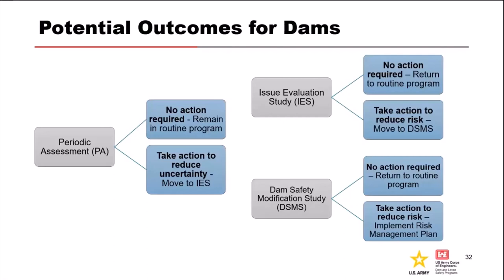Here are the potential outcomes for dams. For a periodic assessment, there are only two outcomes: either we don't need to do anything more and return to the routine program, or we need to take action or reduce uncertainty and go to an issue evaluation study. For an issue evaluation study, there are again only two outcomes: either go back to the routine program, or proceed to a dam safety modification study to reduce risk. Coming out of a modification study, there are only two potential actions: no action — which does happen sometimes — or take action to reduce risk, resulting in a selected risk management plan. No action actually wins a lot, which is good.